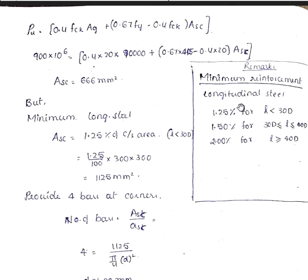If you observe the length and breadth here, this is the first case. So we have to consider the minimum longitudinal reinforcement as 1.25% of the cross sectional area. Cross sectional area of the pile is 300 into 300. After solving this, we got 1125 mm square. This is greater than the ASC calculated earlier.